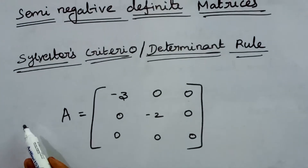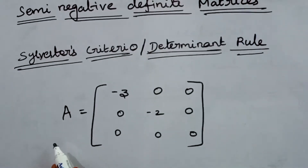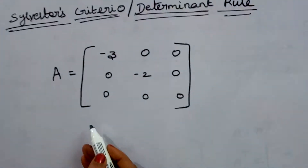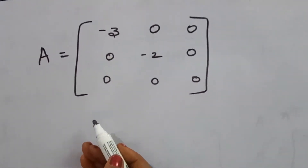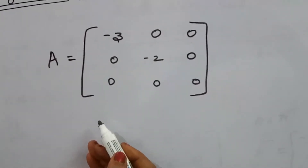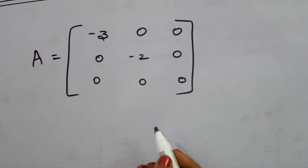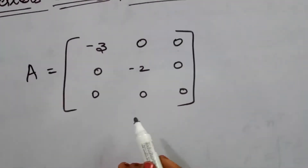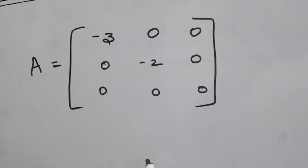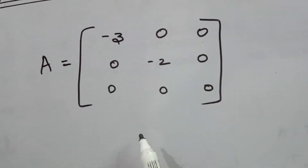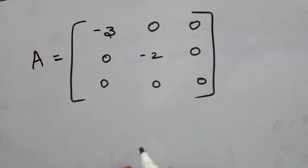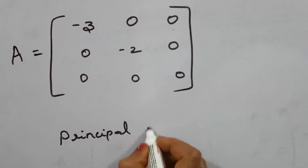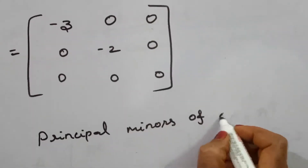The next method for checking whether a given matrix A is semi-negative definite is Sylvester's criterion — also called the determinant rule. We discuss principle minors of all orders. For positive and negative definite matrices we use leading principal minors, and here we check principal minors of all orders.